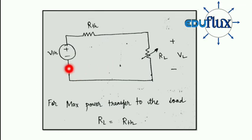See here, this is a basic circuit that is being reduced into Thevenin's form. This is the Thevenin's voltage, this is the Thevenin's resistance, and this is the load resistance. Across the load resistance we are getting load voltage. Now for maximum power transfer to the load, RL is equal to RTH.